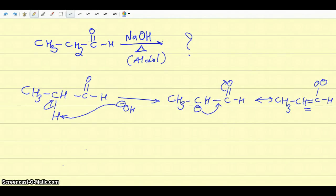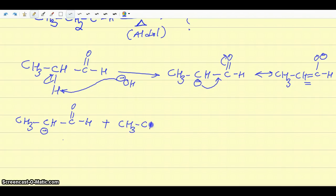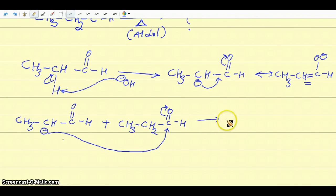This enolate is the one that goes and reacts with another molecule of aldehyde. So I'm going to redraw the enolate here, and then it's going to react with another molecule of aldehyde. This negative charge — the enolate — is going to act as a nucleophile, and the carbonyl carbon of the second aldehyde is going to act as an electrophile. This carbon is going to attack that electrophile.